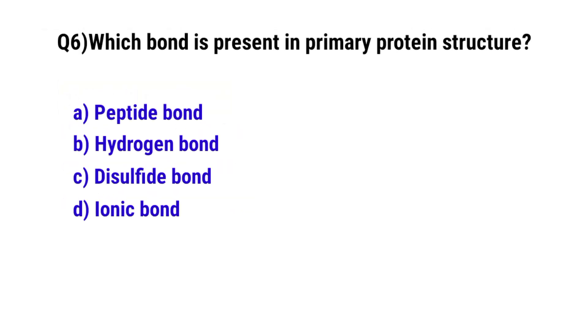Question No. 6: Which bond is present in a primary protein structure? The correct option is a peptide bond.